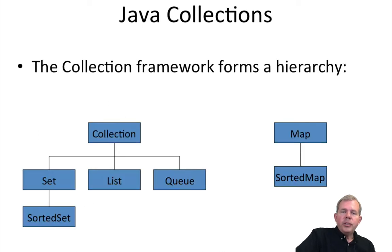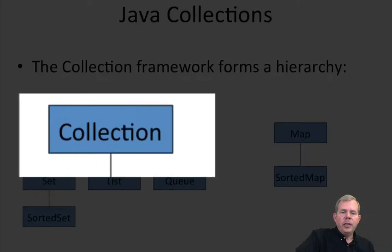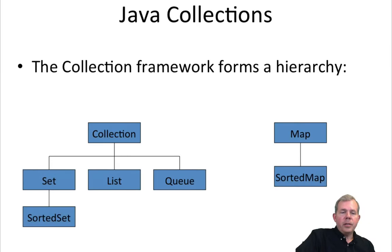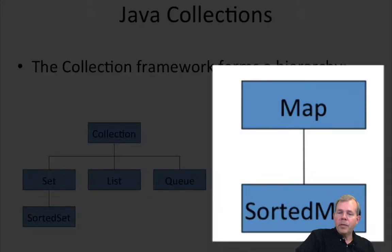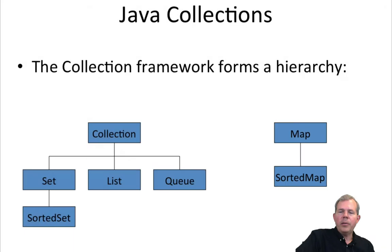In Java, there's a whole hierarchy of how these objects are inherited. Starting at the top with collection, you can see that there are sets, lists, and queues on one side, and over on the other side is a different kind of category called map. We'll look at both sides here.